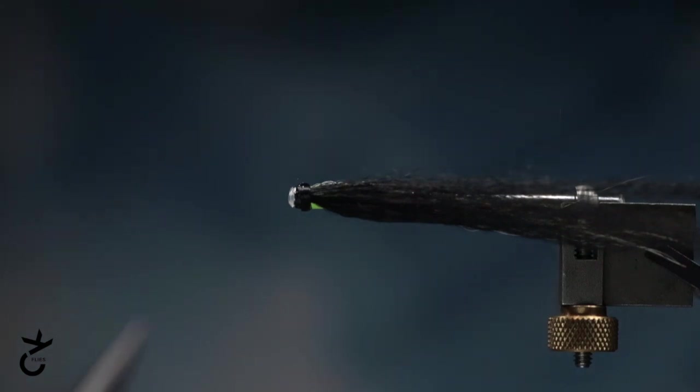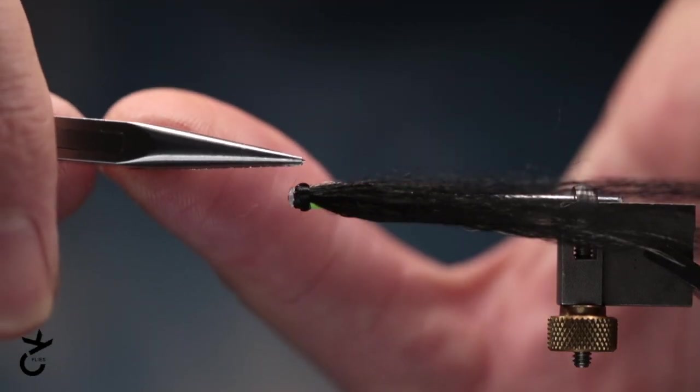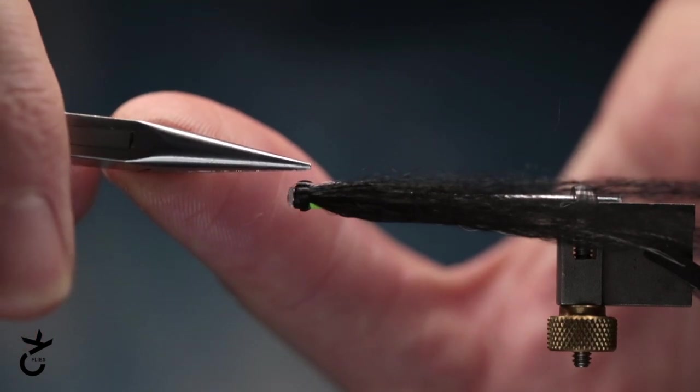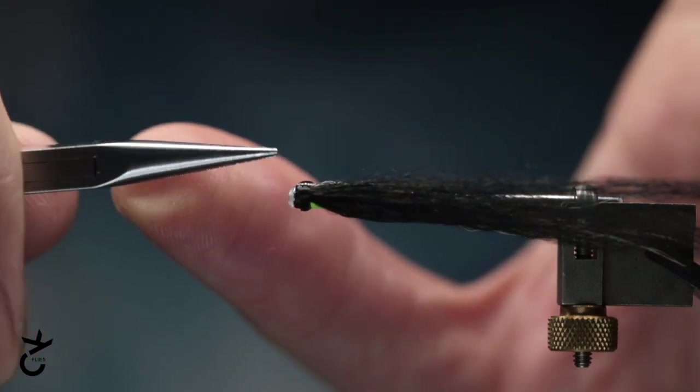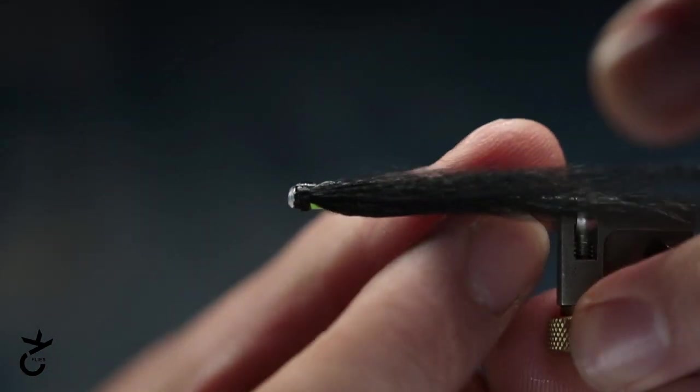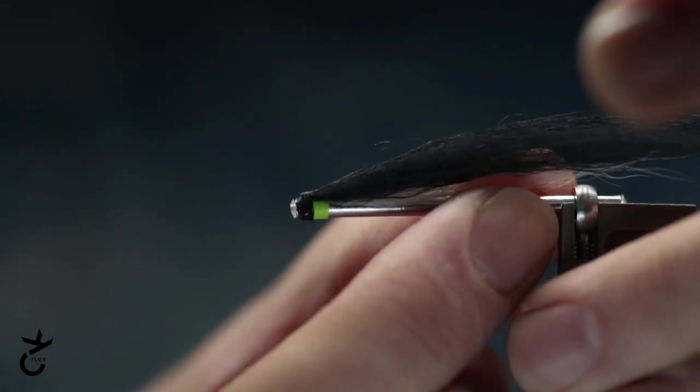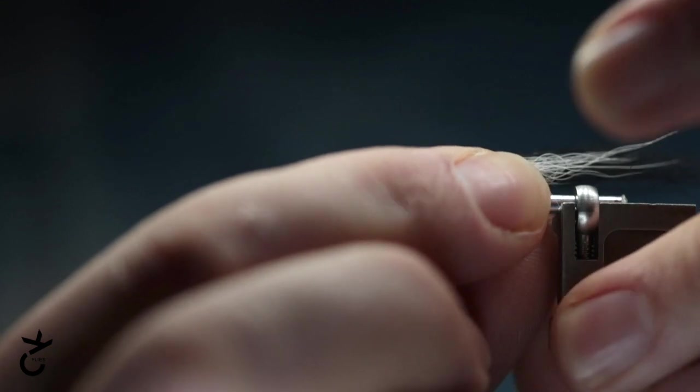So just pop these off, quite fiddly and I always end up, I used to always get my fingers stuck on there on the fly, so I just use a little pair of pliers just to drop the eye on. So there, so once that's on I'm going to spin it around the other way.